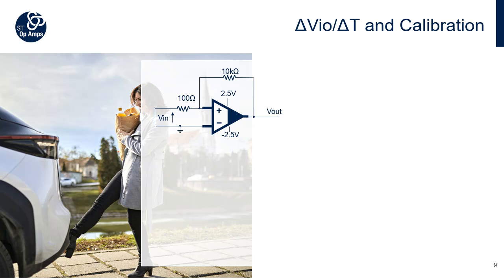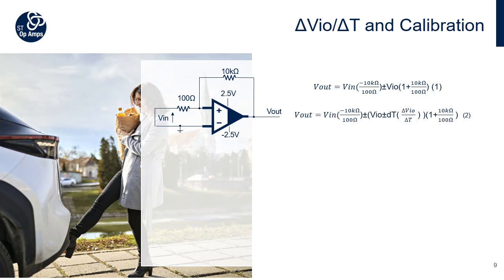As the VIO is principally due to the mismatching of the input components, this parameter will also vary depending on ambient temperature. So it is important to take into consideration, in a precision environment, the offset drift over temperature, generally called dVIO/dT. The VIO is always multiplied by the non-inverting gain of the OpAmp and added to the amplified signal. The transfer function is determined by equation 1, where VIO is the maximum value written in the datasheet. Adding the effects of temperature gives equation 2.